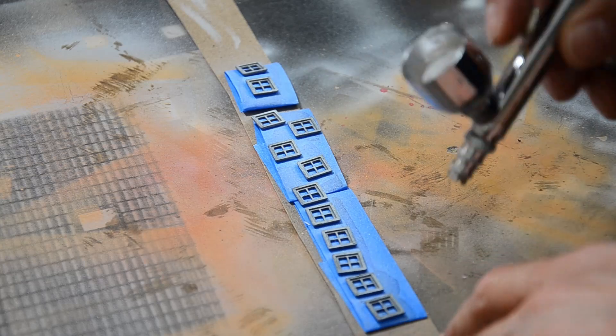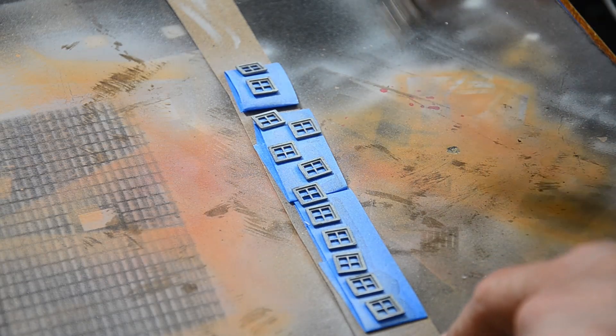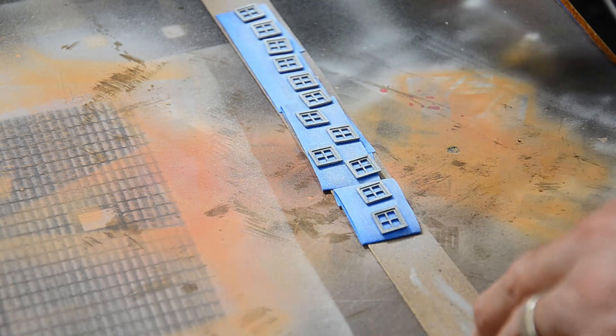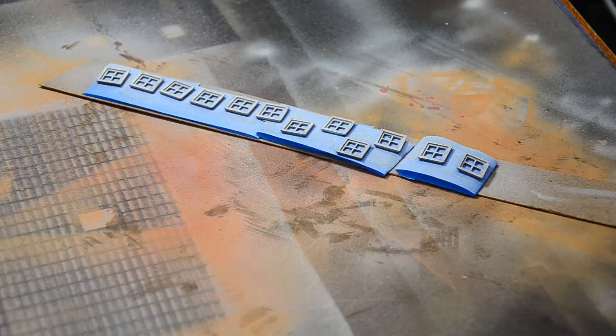The windows got a coat of Createx White. Createx is an airbrush paint, more for creating paintings than painting models, but it sprays well, and since it would be mostly removed in chipping, I figured it would work well.